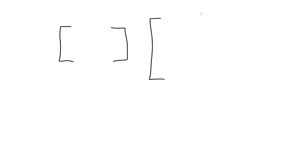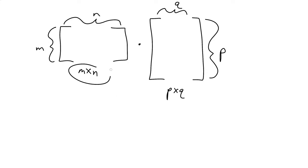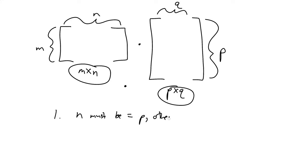So first of all, let's talk about the dimensions involved, because this is kind of weird too. Let's say I have a matrix here — it might be square, it might not. And let's have another matrix over here — it might be square, it might not. I want to multiply the two of them together. So there are two rules. Let's say the first is an M by N matrix — M rows and N columns — and the second is a P by Q matrix.